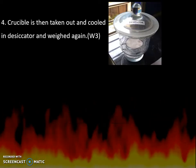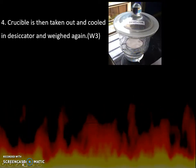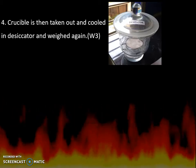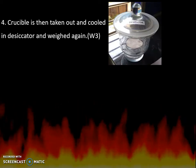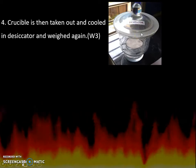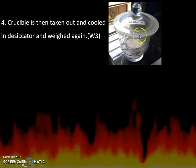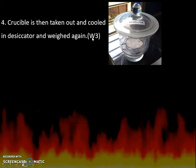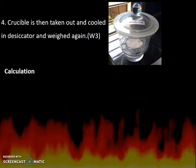After one hour, the crucible along with the coal sample is taken out and cooled in a desiccator. The desiccator is used because if you keep the crucible open it absorbs moisture from the environment; the desiccator prevents that. After cooling at room temperature, the weight of the crucible with the coal sample is taken as W3 grams.